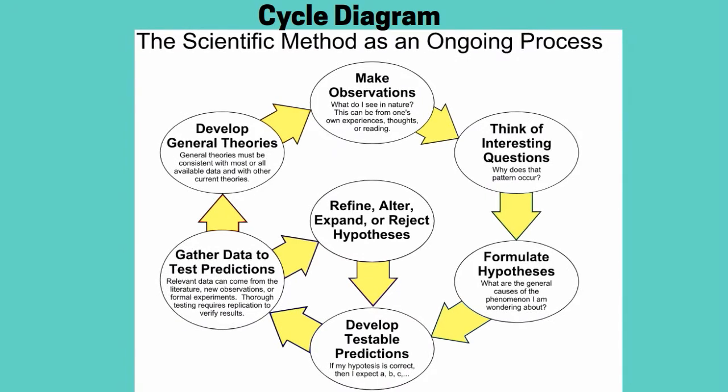Next are cycle diagrams. A cycle diagram can be used to show a sequence of events that is continuous or cyclical. A continuous sequence does not have an end because when the final event is over, the first event begins again.